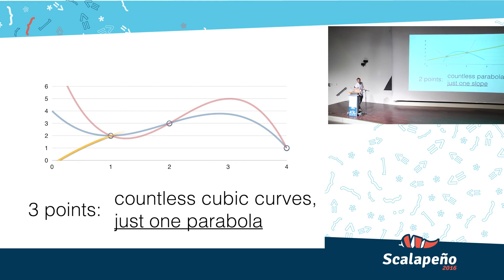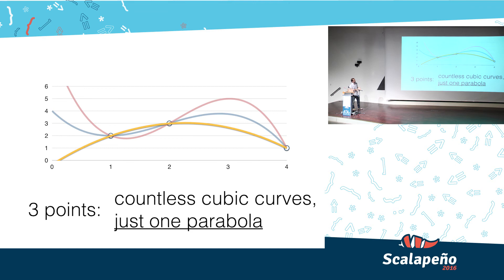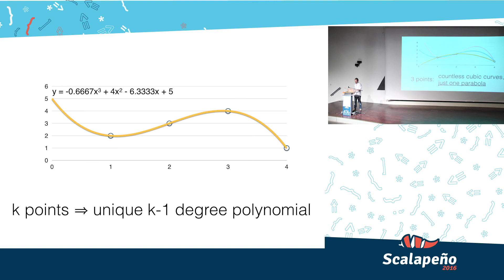Step that up to three points, there is only one parabola that passes through those three points, but infinitely many higher degree curves. And, to extrapolate from that, once we have K points, K shares from earlier, we are guaranteed to be able to calculate a unique K minus one degree polynomial.